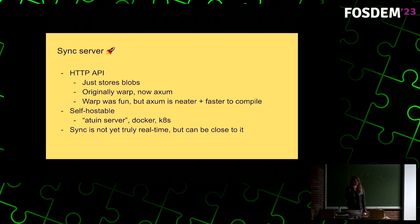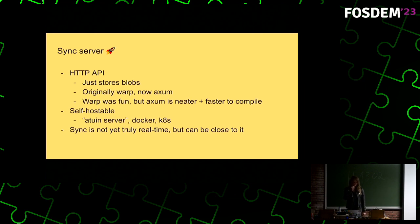A little bit more about the sync server: it's a pretty boring HTTP API that shares blobs, and it has no idea what the blobs actually contain. It was originally written with Warp, which I found to be very fun — a nice mental exercise. We ended up rewriting it with Axum, because while Warp was fun, it was difficult for contributors to figure out and contributed pretty massively to high compile times. Axum has solved those problems. The Atuin sync server is completely self-hostable — anyone can just run 'atuin server' and have a running server. We also have Docker images and Kubernetes manifests for anyone that wants to get a little bit more fancy.